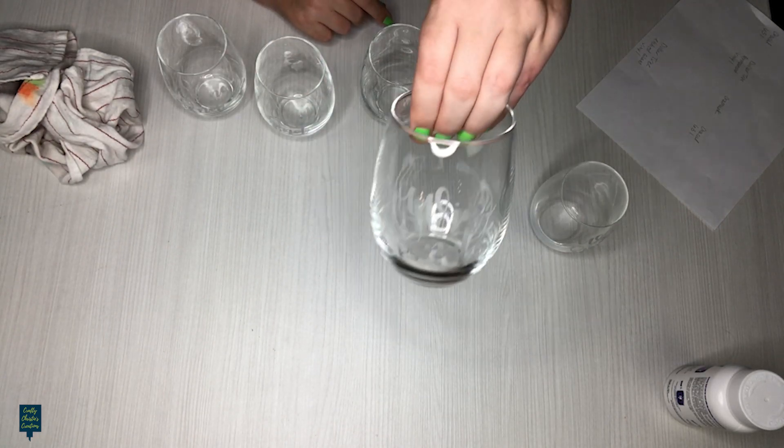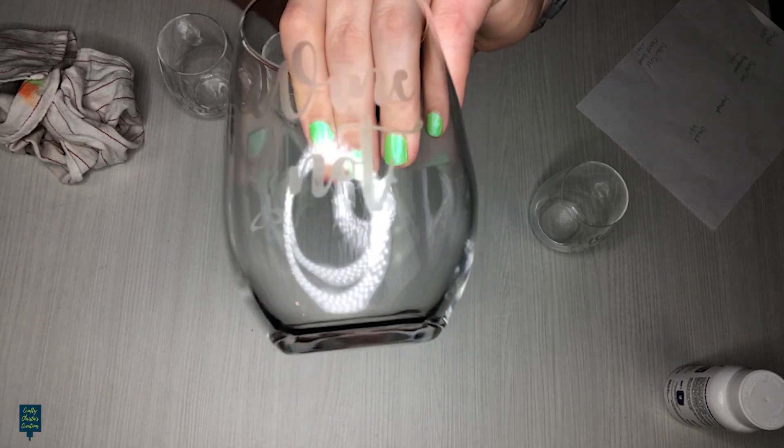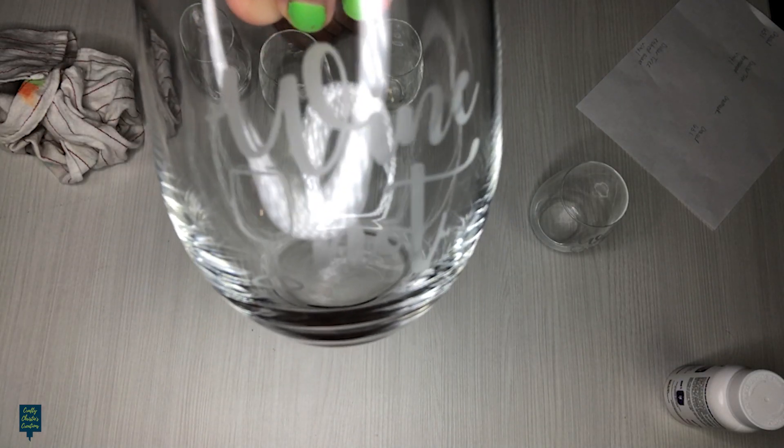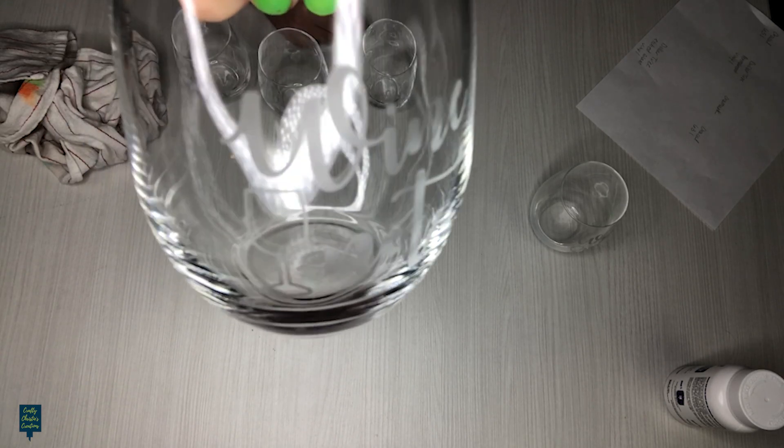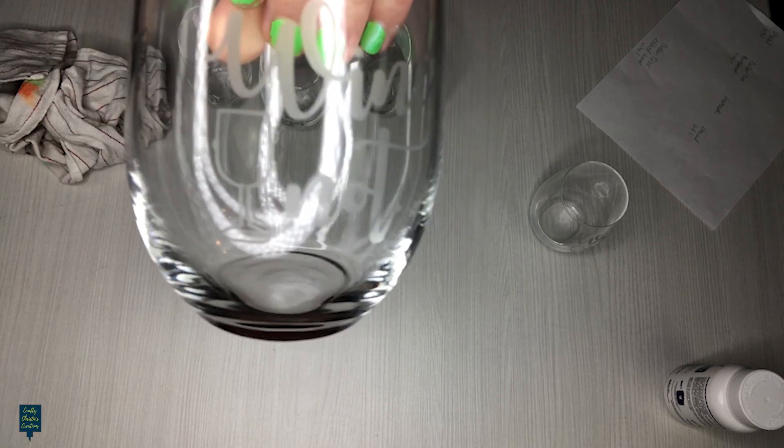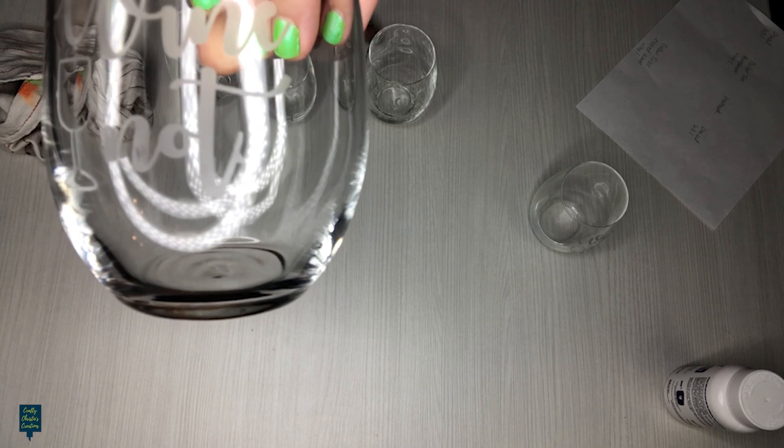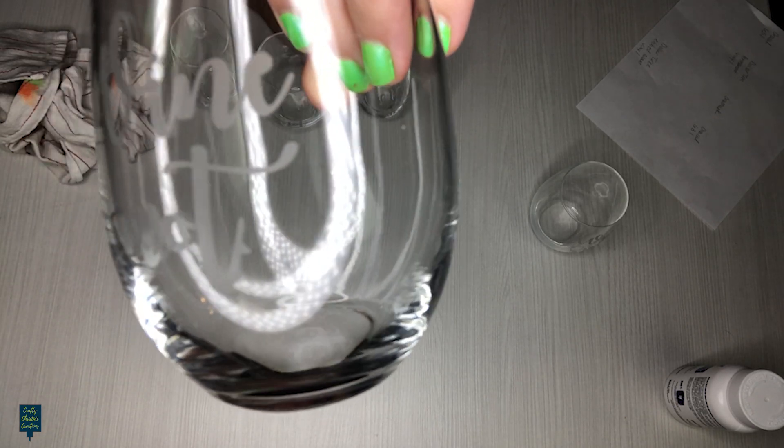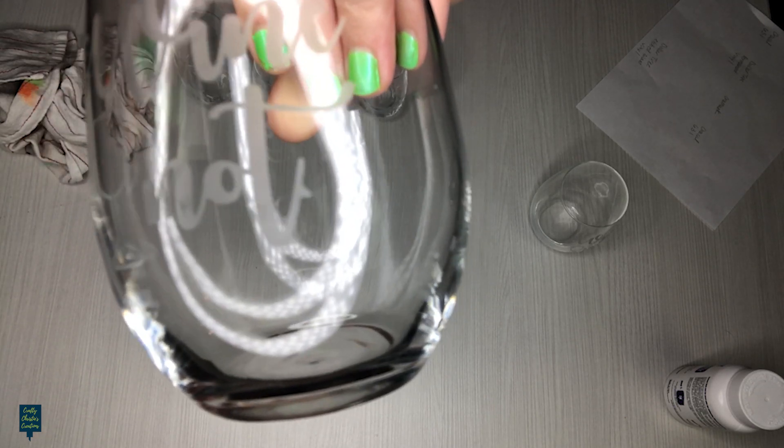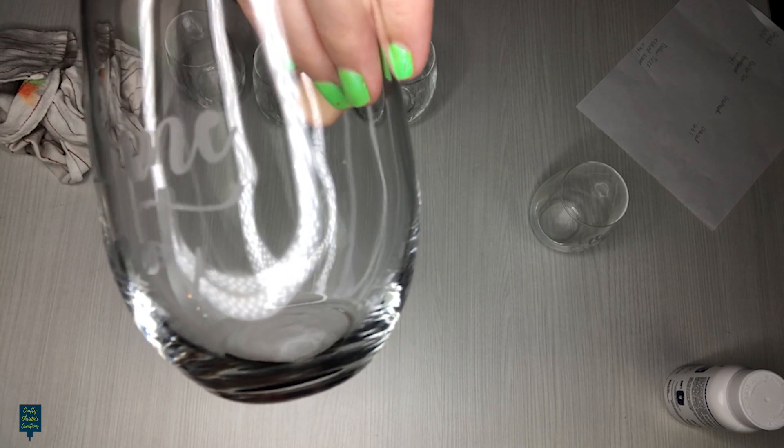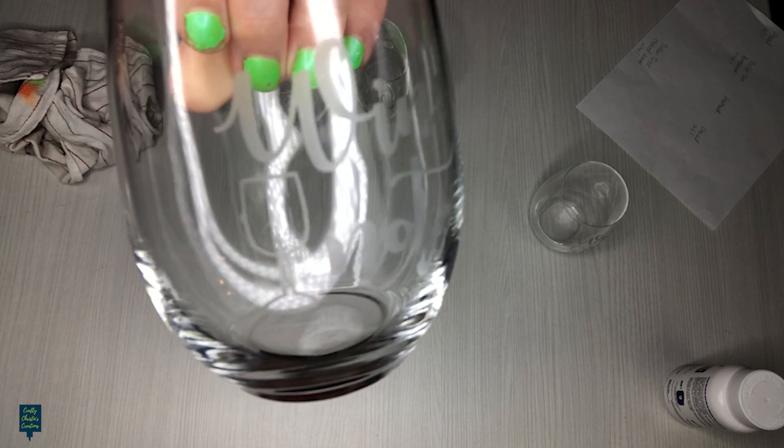And then we've got the Oracal 631. So this is the temporary vinyl. And this one again, I have a couple little spots around the edge of that wine glass, and then around the T there was some issues there, but overall not bad.